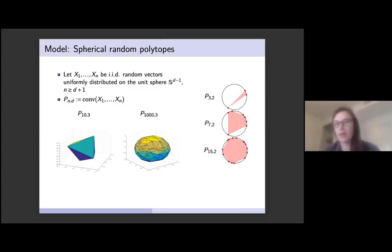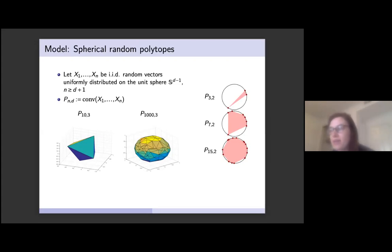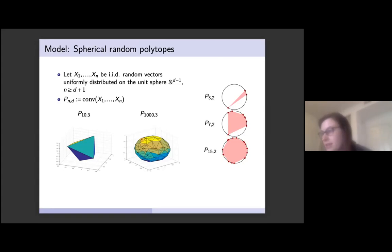By spherical random polytopes, we mean the model where we take points X1 through Xn to be n independent random vectors that are uniformly distributed on the unit sphere in R^d. We consider the polytope obtained by taking the convex hull of these random vectors, denoted by P_{n,d}. We assume that n is greater than or equal to d plus one, so we obtain a full dimensional polytope.